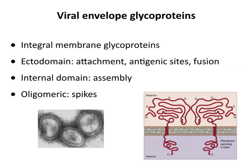When a virion has an envelope, it always has viral proteins embedded in it — called viral envelope glycoproteins. These are integral membrane transmembrane glycoproteins with an ectodomain, a transmembrane domain, and a part inside the virus particle. The external part is used to attach to cell receptors, to fuse to cell membranes, and it's the part against which antibodies are made during immune response. The internal part has to do with assembly. They're often oligomeric on the virus surface. In influenza virus, you can see spikes in the EM — those are trimers of a single glycoprotein — and that's where the word spike comes from.